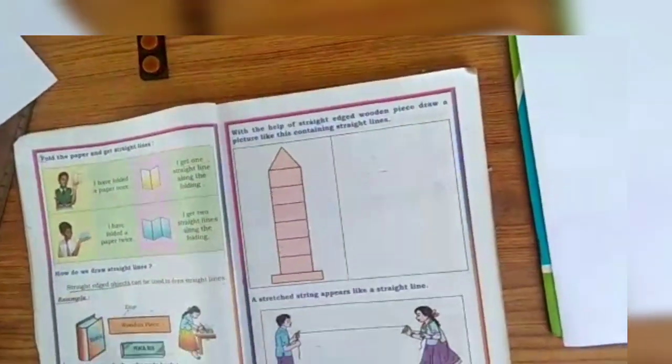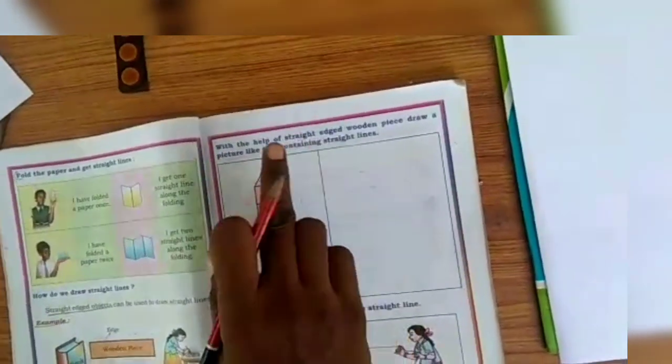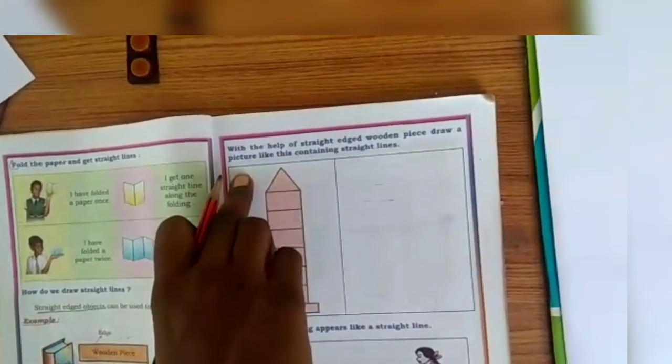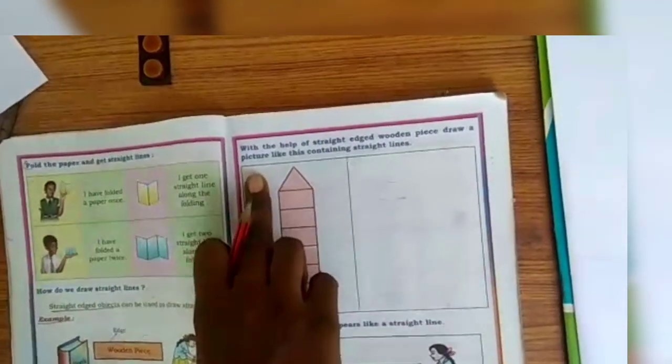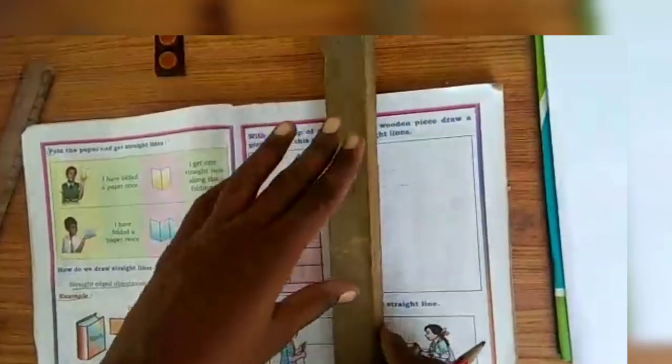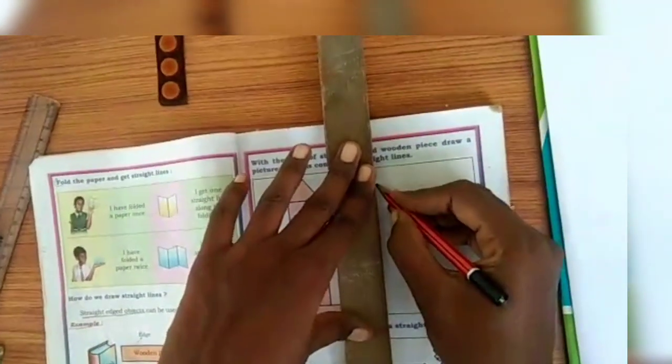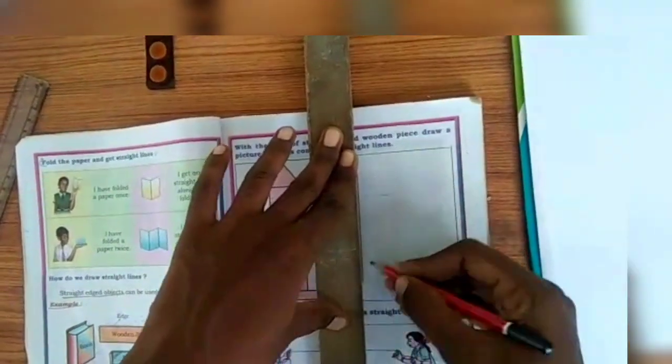Next, turn to the third page. You should try this one, the third activity. You should take one small wooden piece and draw a picture like this.